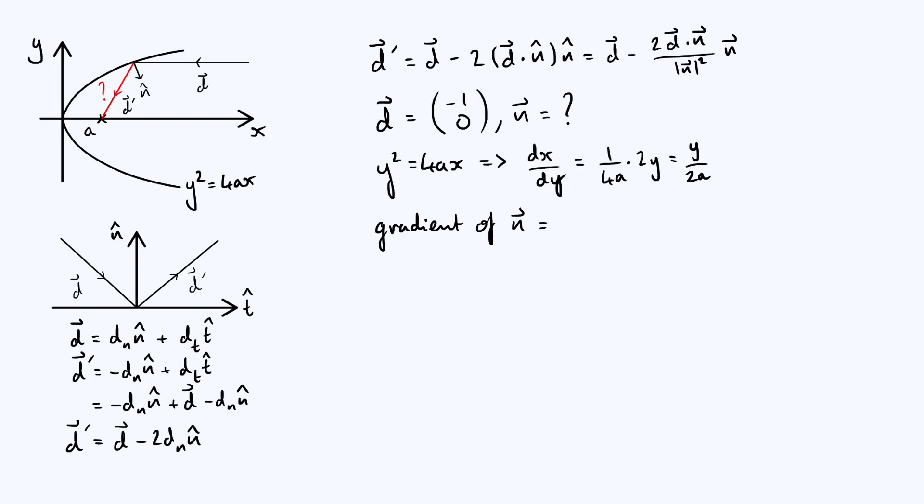Now what does that have to do with the normal n? Well, if you think of the normal vector as being a line segment, then it has a gradient, and we can use that dx/dy to figure out the gradient of n. Because it is perpendicular to the curve, because it's a normal, we can use the rule for gradients perpendicular lines and say that the gradient of that vector, the line segment defined by the vector, is -1 over the gradient of the curve, which is dy/dx, and this of course is the same as -dx/dy, and so the gradient of the normal vector is -y/(2a).